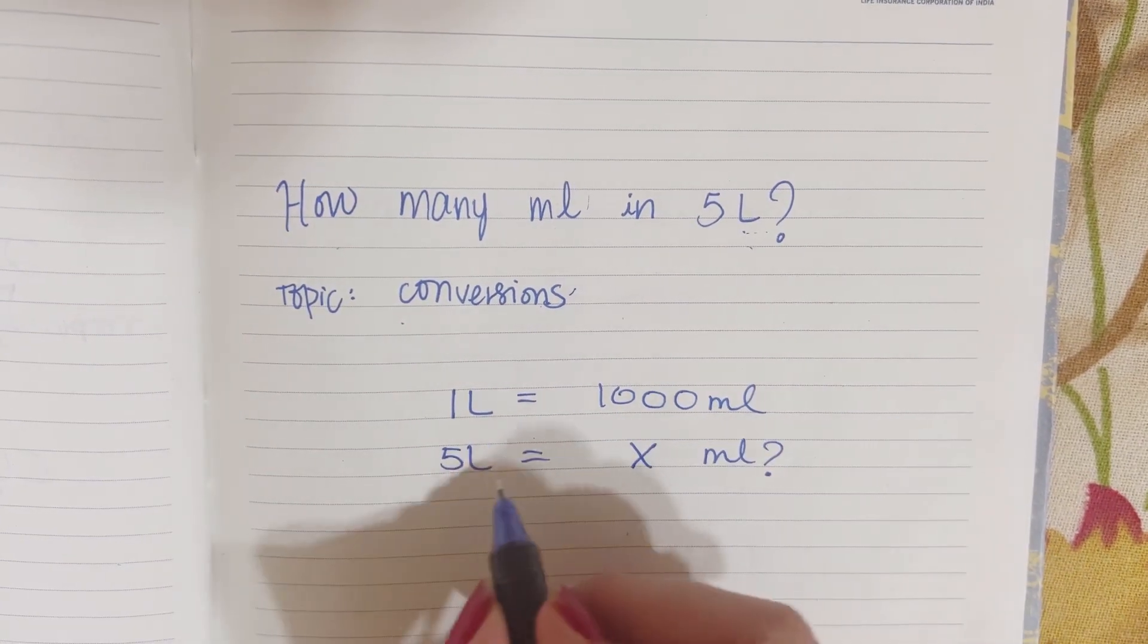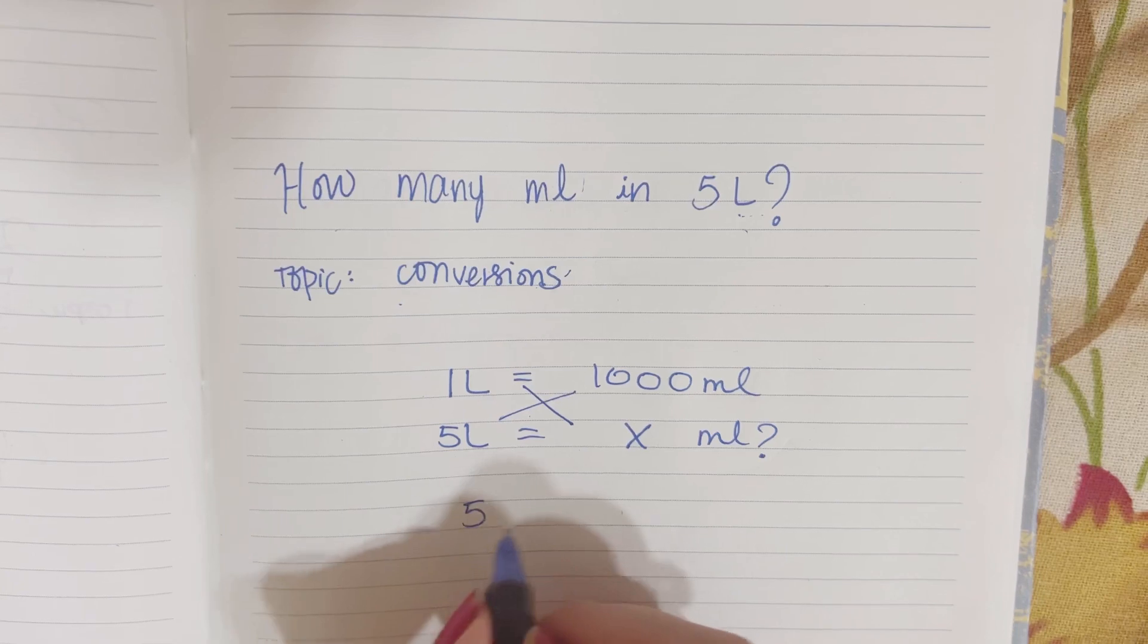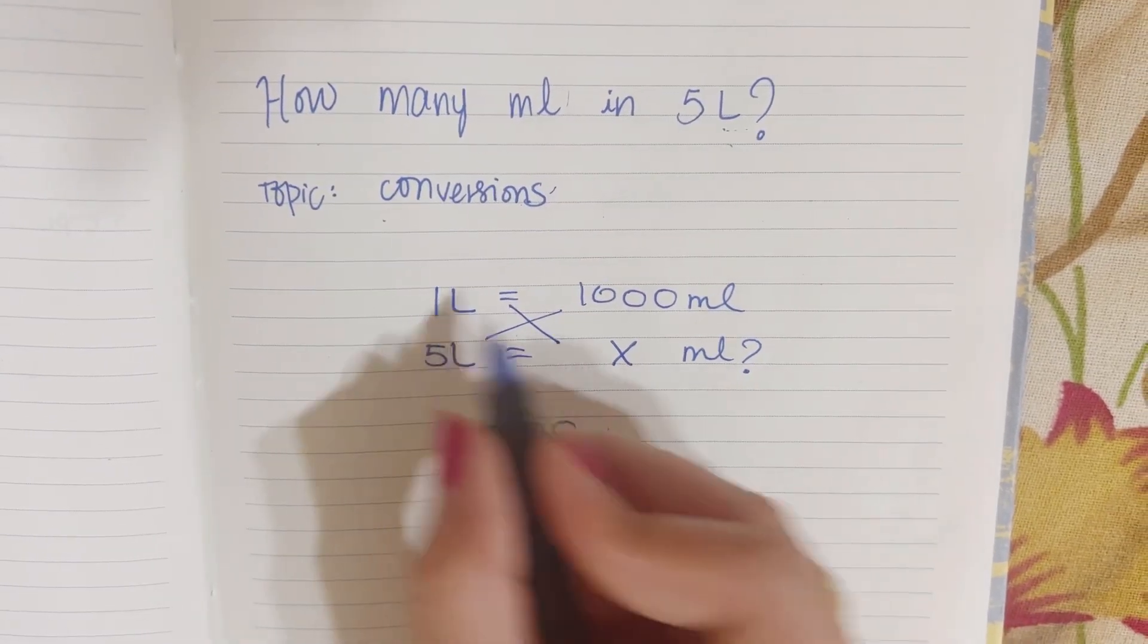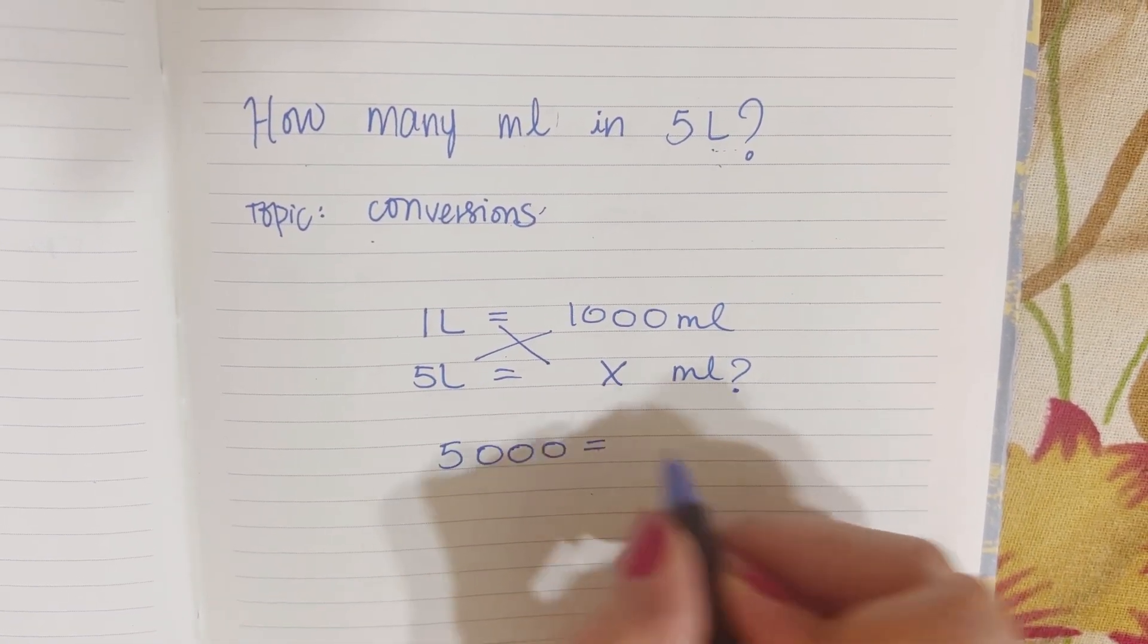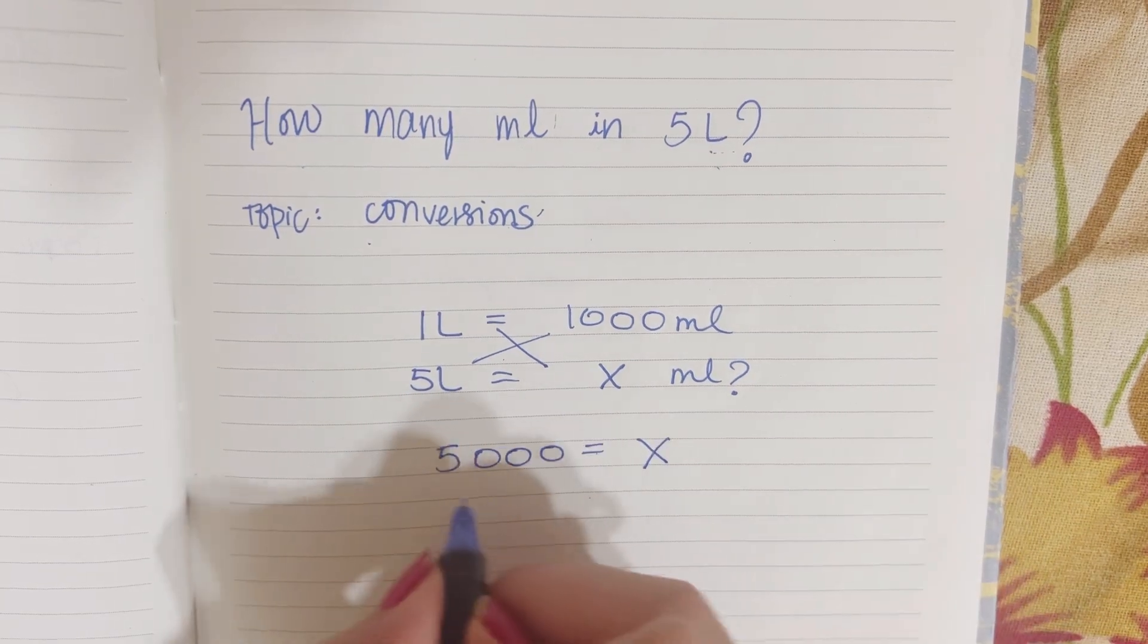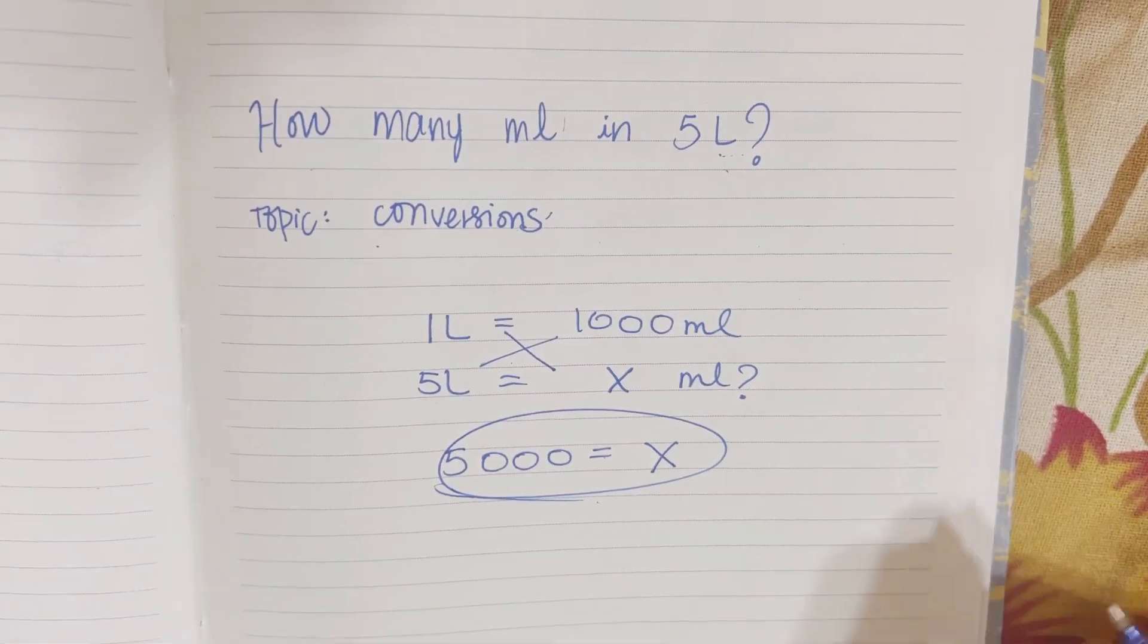You just multiply across: 5,000 multiplied by 1x, which is x. So your answer is 5,000 milliliters.